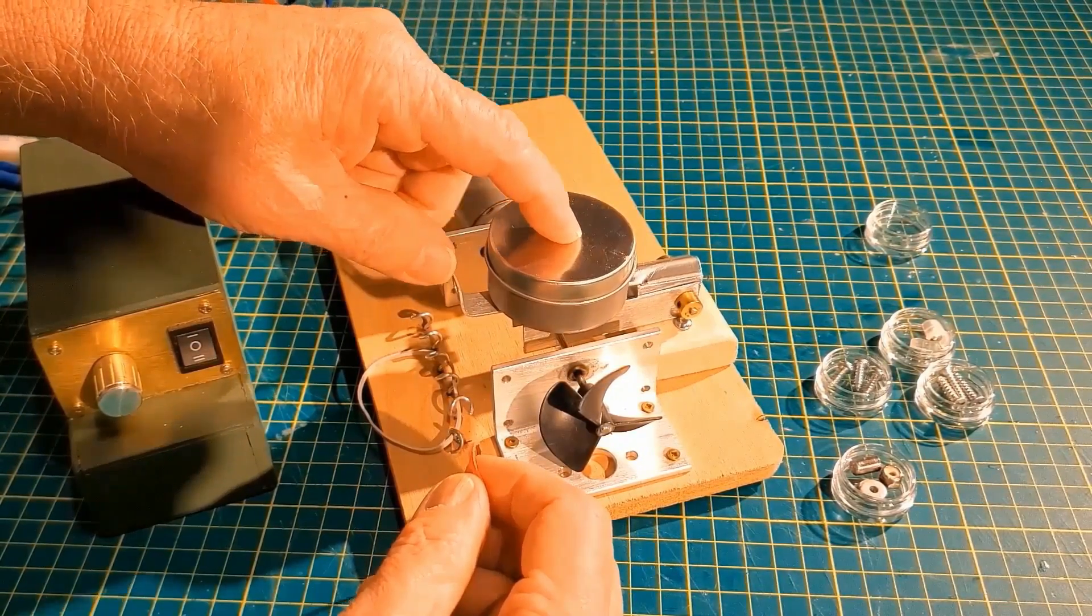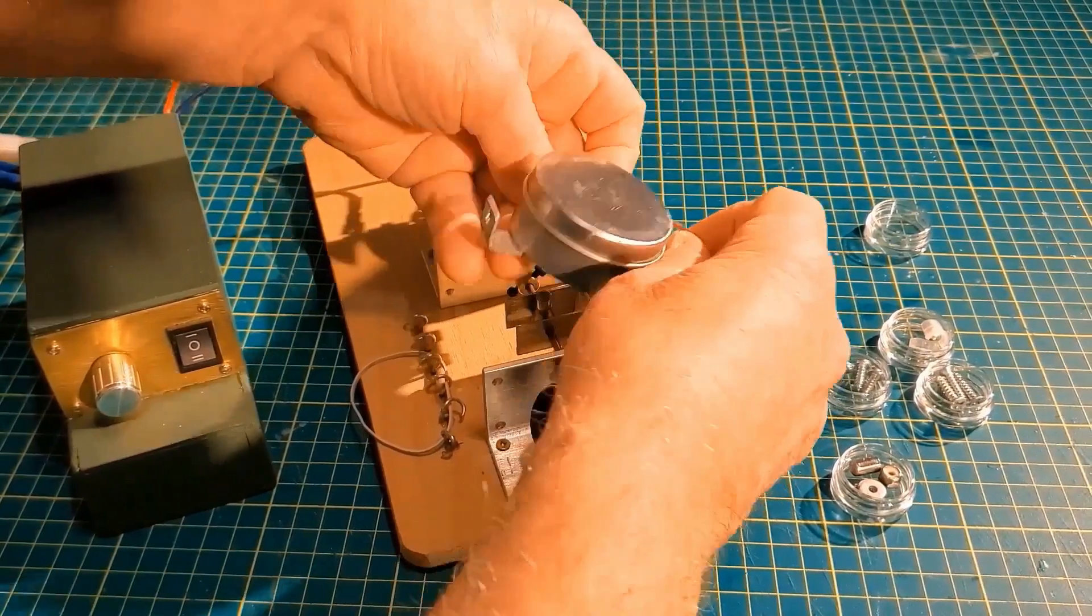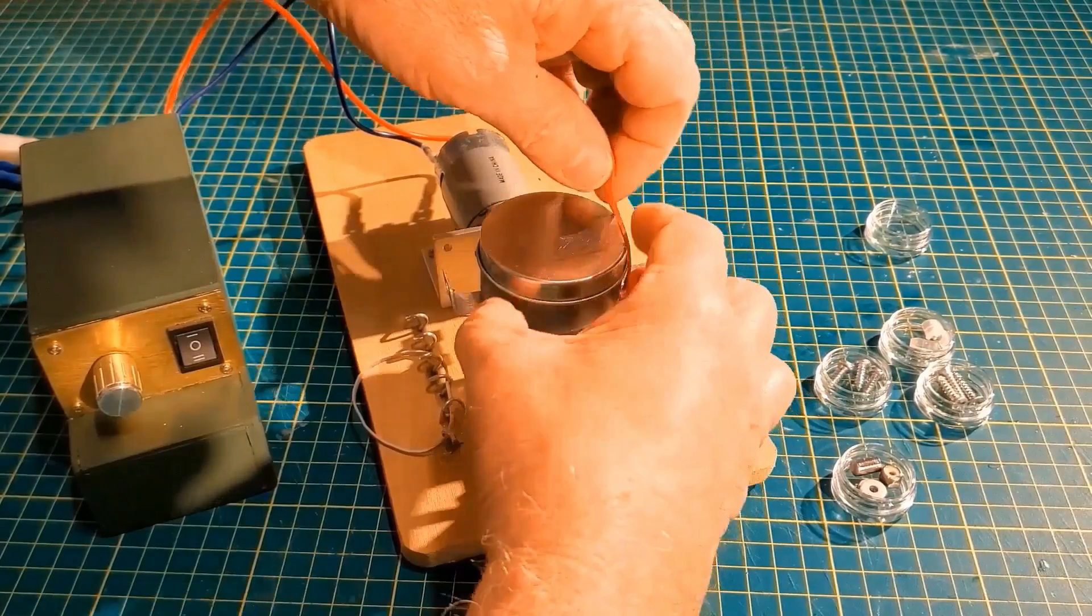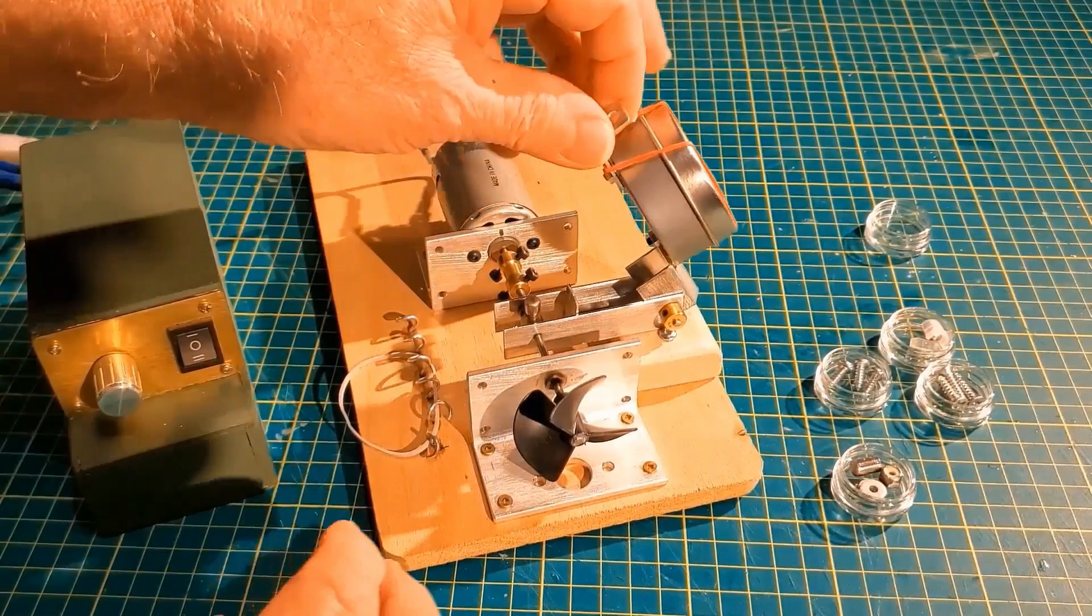In order to make sure this lid stays on the can I'm going to get a thin elastic band and I'm going to arrange it like this.